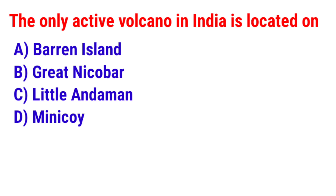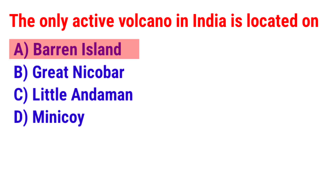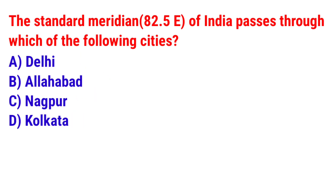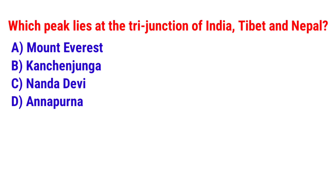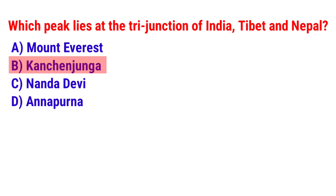Question 11: The only active volcano in India is located on? The answer is option A — Barren Island. Question 12: The Standard Meridian of India passes through which of the following cities? The answer is option B — Allahabad. Question 13: Which peak lies at the trijunction of India, Tibet, and Nepal? The answer is option B — Kanchenjunga.